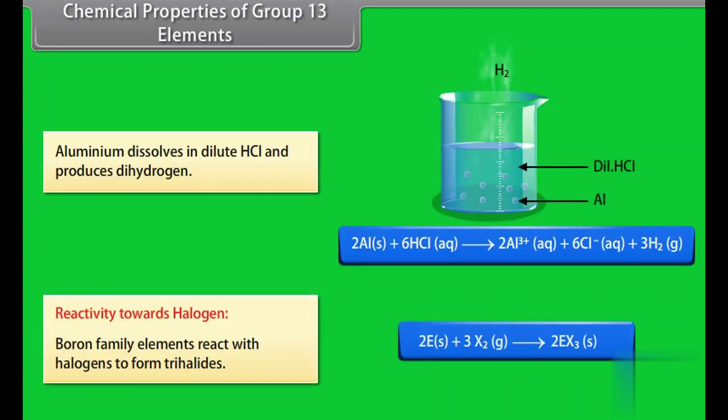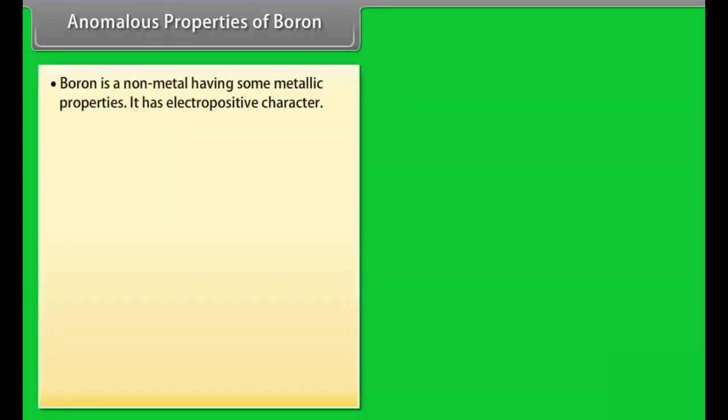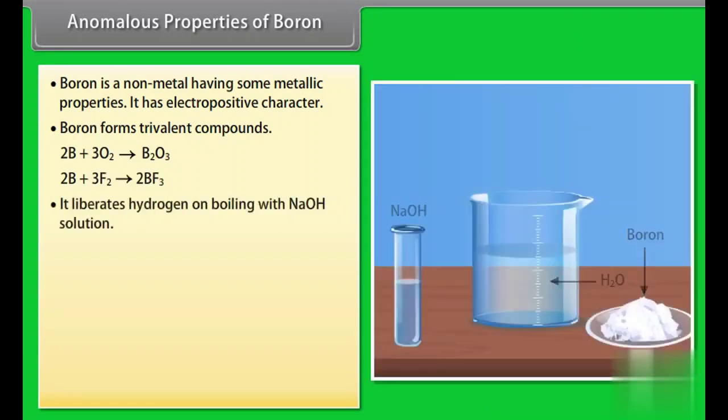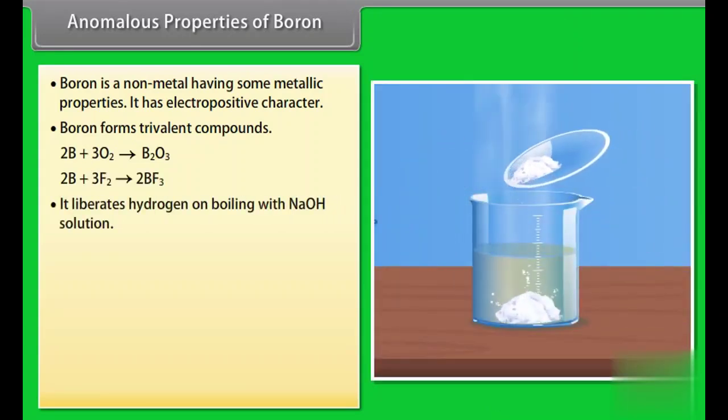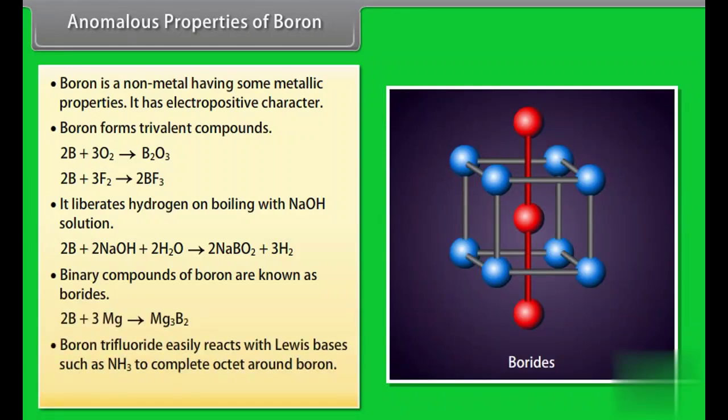Anomalous properties of boron. Boron is a non-metal having some metallic properties. It has electropositive character. Boron forms trivalent compounds. It liberates hydrogen on boiling with NaOH solution. Binary compounds of boron are known as borides. Boron trifluoride easily reacts with Lewis bases such as NH3 to complete the octet around boron.